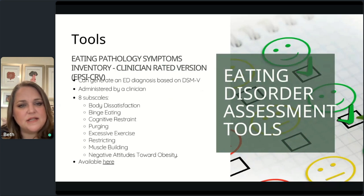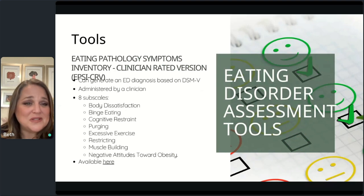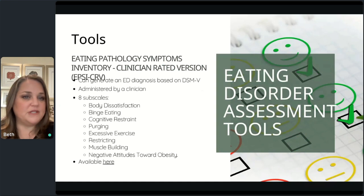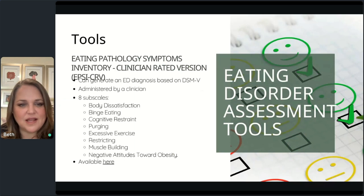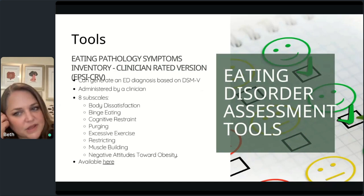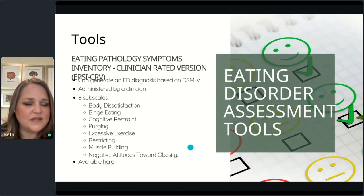The Eating Pathology Symptoms Inventory, or EPSI, can generate an eating diagnosis based on the DSM-5 and has eight subscales covering many eating disorder behaviors. One important caveat: none of the tools mentioned so far are validated for people with co-occurring GI issues. So while these are great tools, if somebody has both an eating disorder and a GI disorder, there aren't many tools available — and diagnosis remains outside our scope as dietitians.